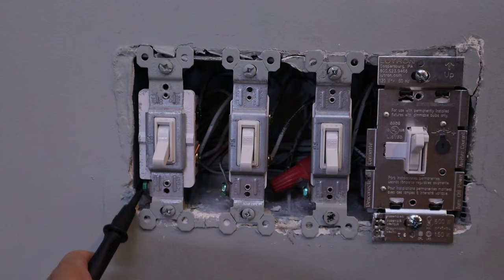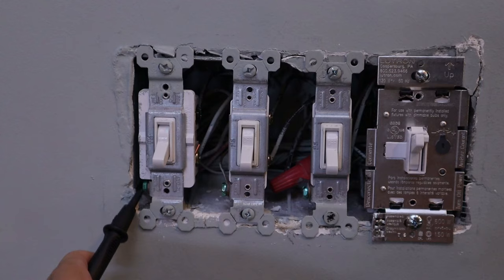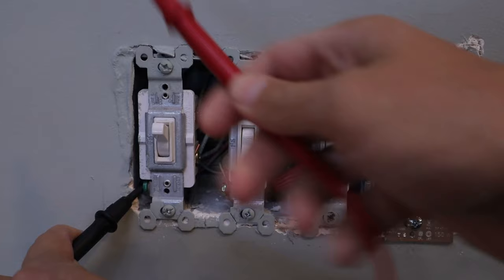So the first step we need to take is we need to turn off the power going to that light switch. So go to your main panel, shut off the circuit breaker that powers that switch, and then we'll use a multimeter to make sure that the power is in fact off.